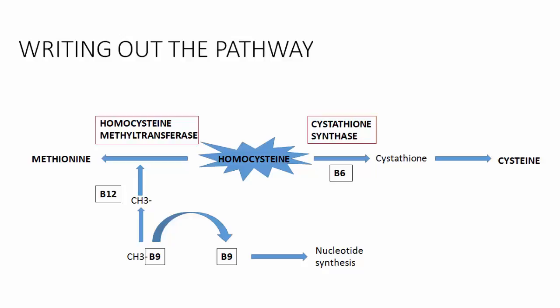If one side isn't working properly, you'll end up pushing down the other side. If the pathway towards cysteine isn't working properly, we'll start accumulating more methionine. And if the methionine pathway isn't working properly, we'll start accumulating more cysteine. This is going to help us work through what's going wrong when we're presented with a patient who has elevated homocysteine. For all intents and purposes, think of us as going down either the B6 pathway to the right or the B12 pathway to the left.